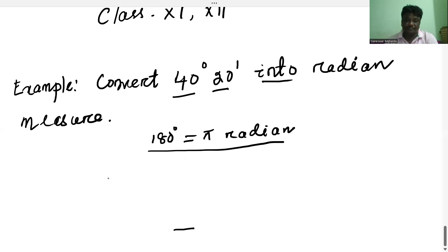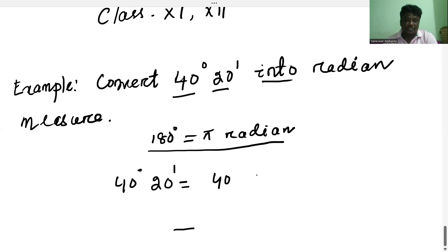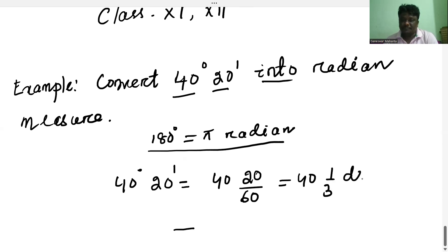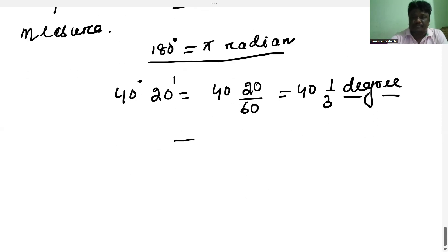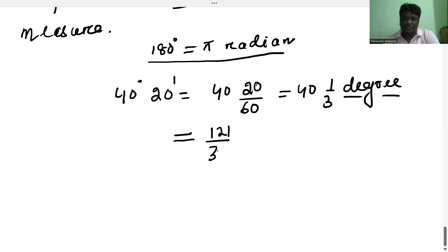We have 40 degrees and 20 minutes. Just remember: 20 minutes converted into degrees is 20 by 60 degrees. So 40 degrees 20 minutes becomes 40 and 1/3 degrees, which simplifies to 121 by 3 degrees.